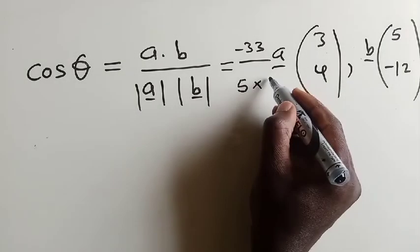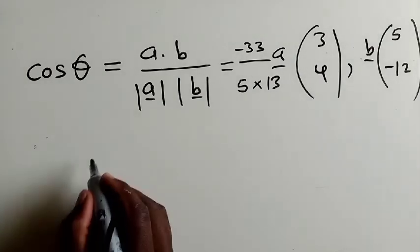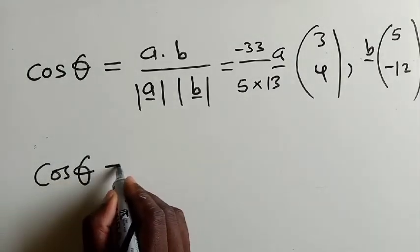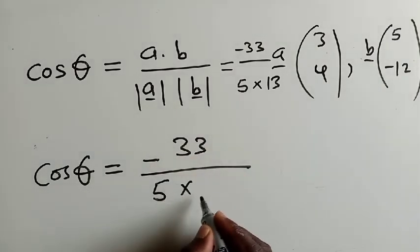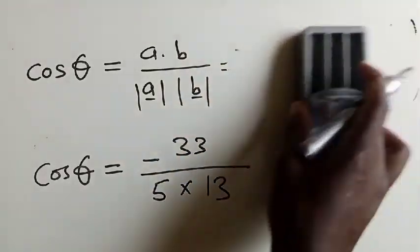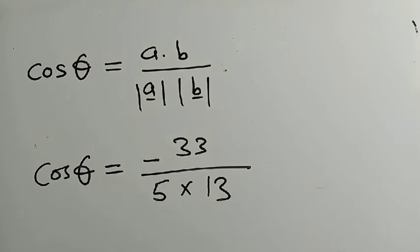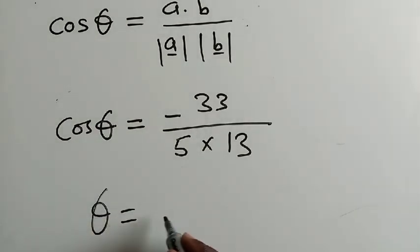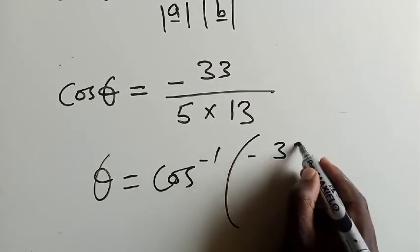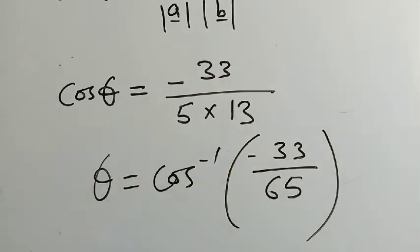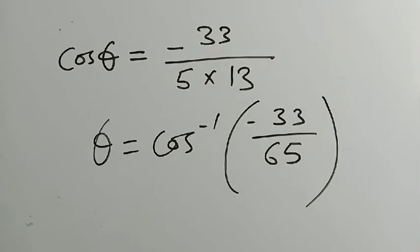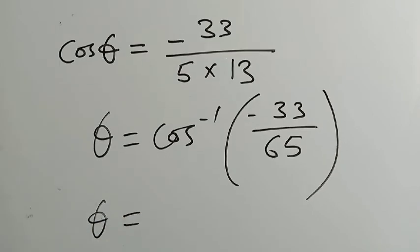We'll put this magnitude of B, which is 13. So we have something like this, cos theta is equal to negative 33 over 5 times 13. So here, we'll find the cos inverse of negative 33 over 65. Because if we say 5 times 13, it's 65.